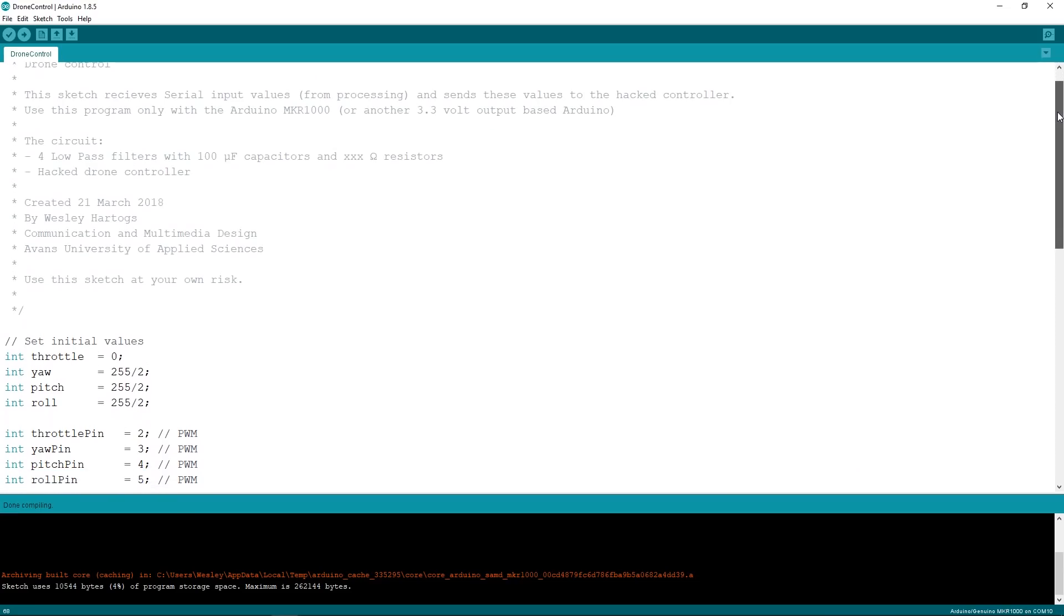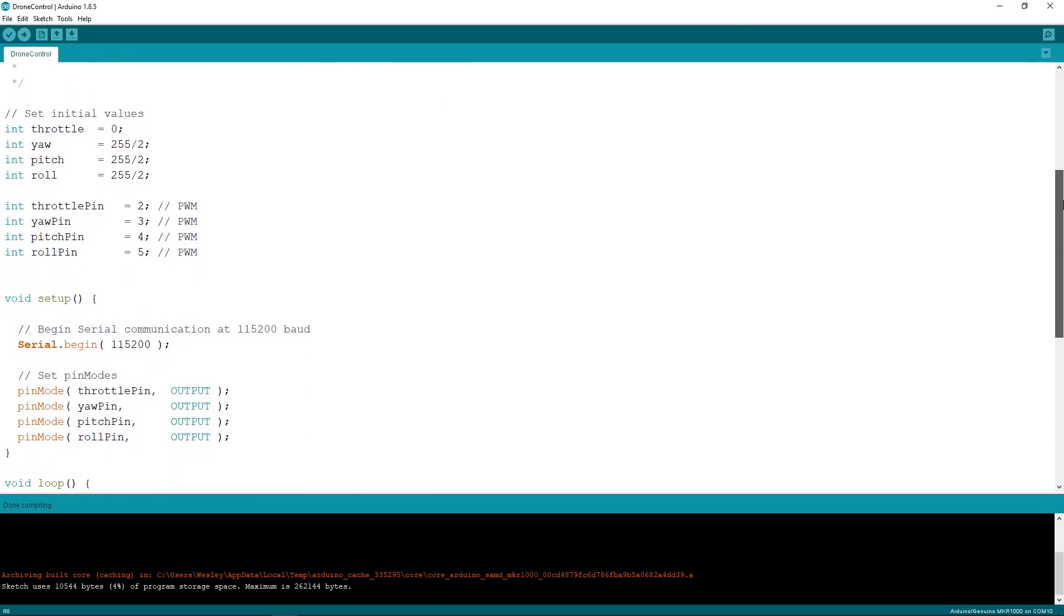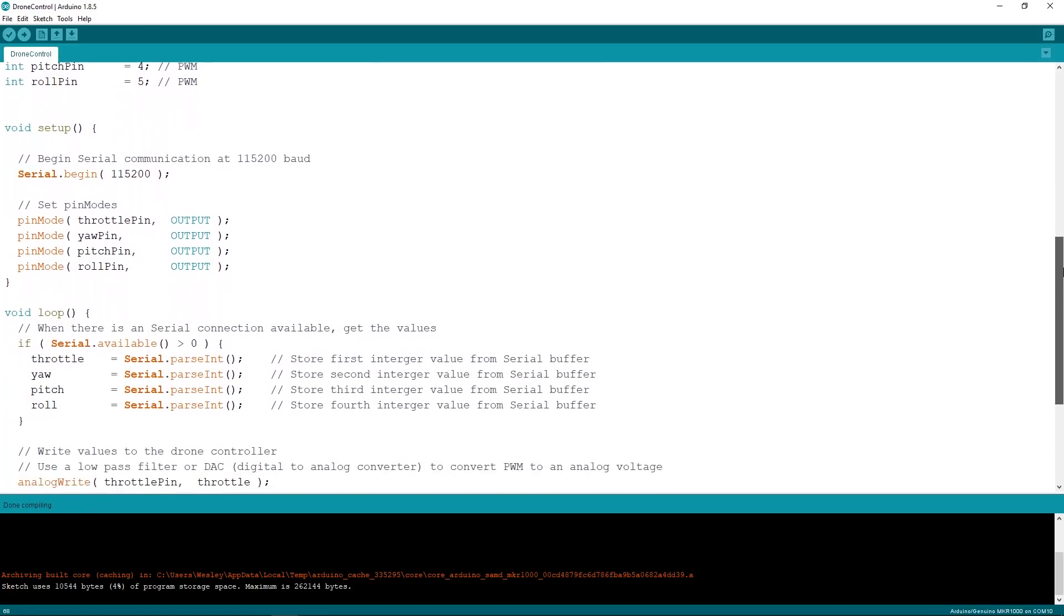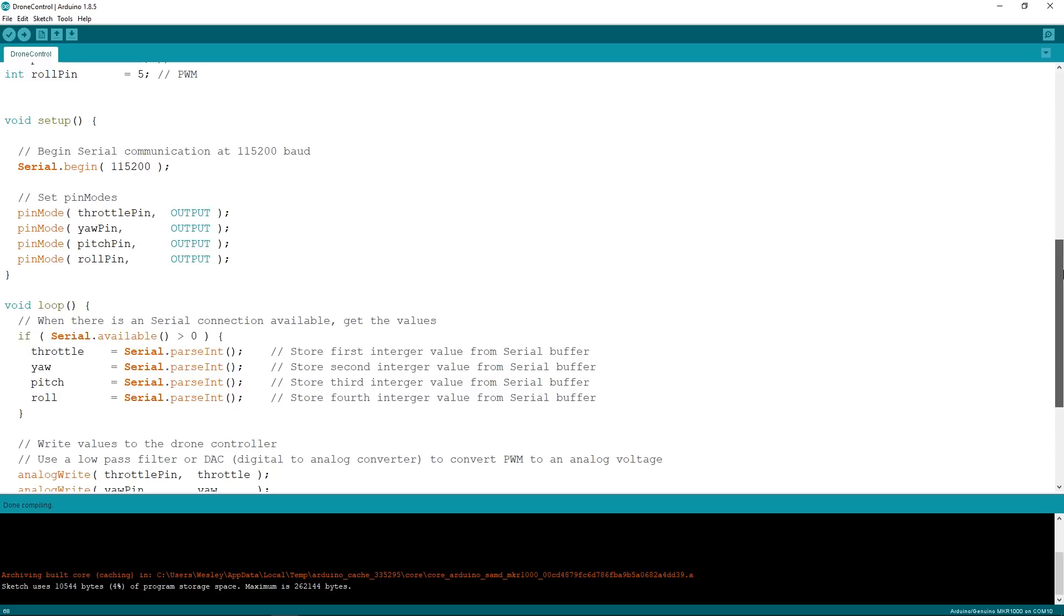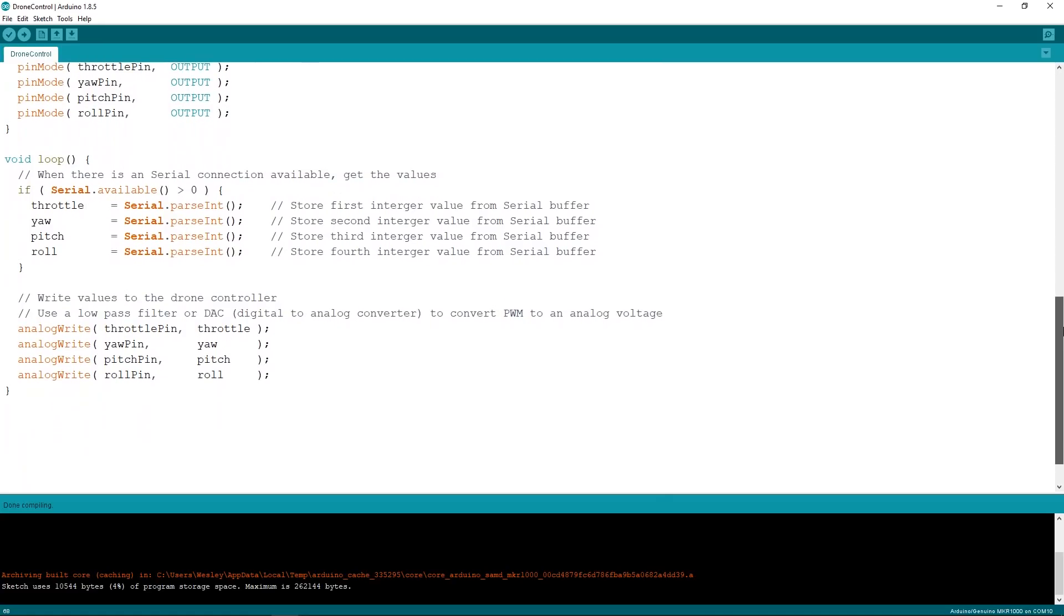There are four variables that control the output: throttle, yaw, pitch and roll. In the setup we start serial communication and set all the pins to output. The Arduino receives four 8-bit values at a time and sends them with analog write to the controller.